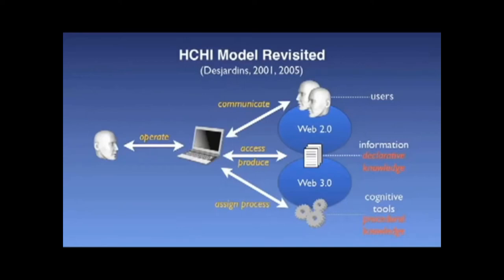The four interaction types are: user-computer interaction; user-technological object interaction; interacting with others, meaning the user interacting through the technological object to other users; interacting with information, where the user interacts with the technological object to access declarative knowledge; and finally, using information processing tools, where the user interacts with the technological object, using computer programs essentially as cognitive tools to create procedural knowledge.